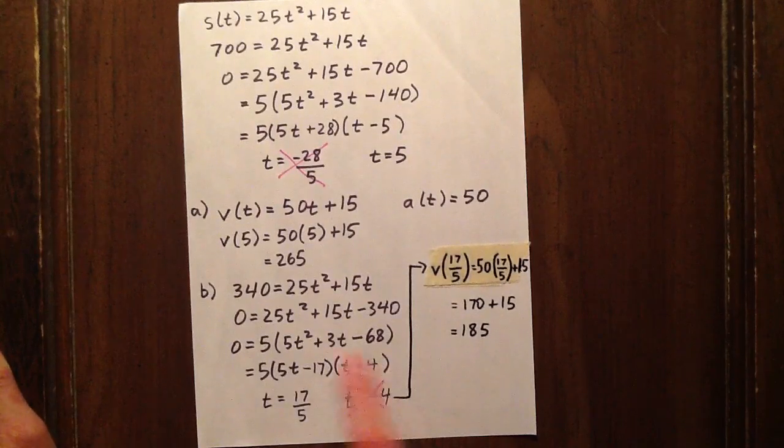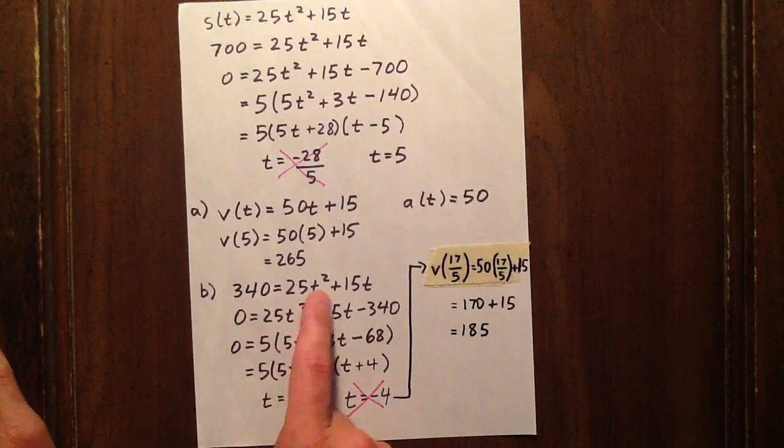Finally, we want to know how fast the car was traveling 340 meters down the road, so we're going to set our displacement quantity equal to 340 and solve for t. Doing that, we get a t value of 17 over 5 or a t value of negative 4. We will use the positive t value for the same reason mentioned earlier, and the velocity after 17 over 5 seconds is 185 meters per second.